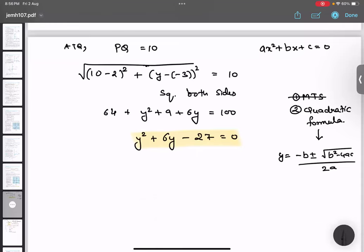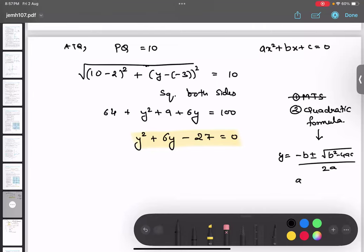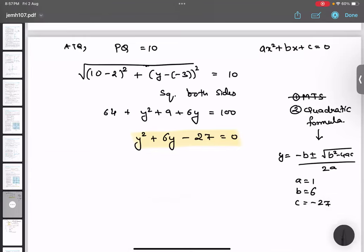So basically over here in my question, a is 1. Yes or no? Yes sir. A is 1. What is b in my question, Angad? What is b in my question? B is 6. B is 6. And Neil, what is c in my question? Minus 27. Minus 27. So I am going to just substitute this thing in this formula.